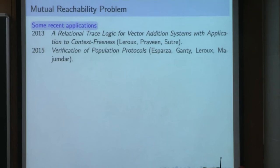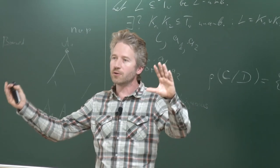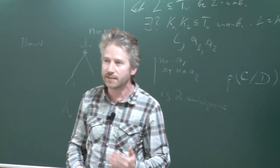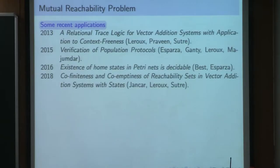The existence of a home state problem in Petri Nets was a long-standing open problem. It was proved to be decidable also thanks to the mutual reachability problem by Eike Best and Javier Esparza. A home state is a configuration such that if you start from the initial configuration, whatever configuration you reach, it's always possible to come back to that configuration. Deciding whether such a configuration exists was open, and they solved it thanks to mutual reachability. With Peter Jancar and Gregor Sutre, we also proved that deciding whether the reachability set from an initial configuration is the full set of configurations - meaning you can reach any possible configuration - is exponential space complete, again using the mutual reachability result from Concur.